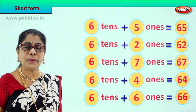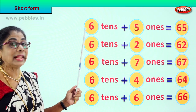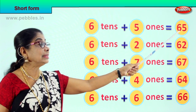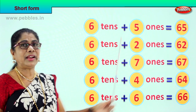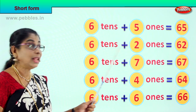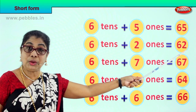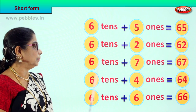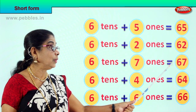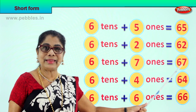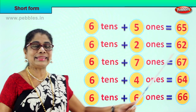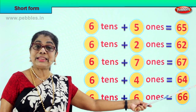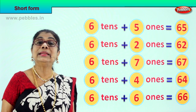Did you enjoy the short form? Let's read together. 6 tenths plus 6 ones is equal to? 65. 6 tenths plus 2 ones is equal to? 62. 6 and 2? 62. 6 tenths plus 6 ones is equal to? 67. 6 tenths plus 4 ones is equal to? 64. 6 and 4? 64.